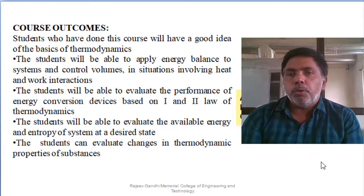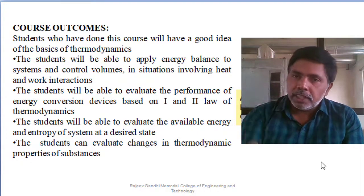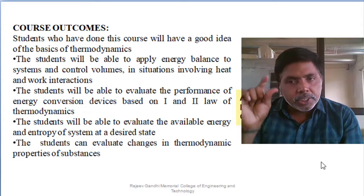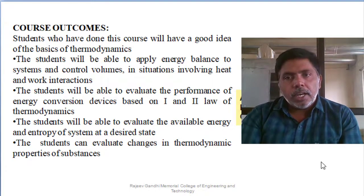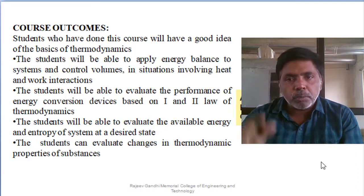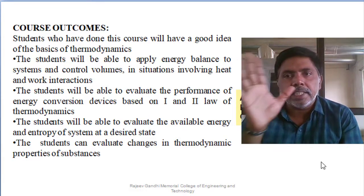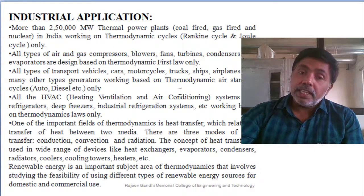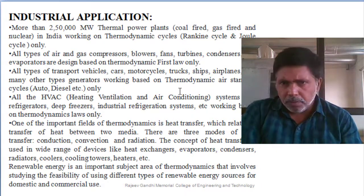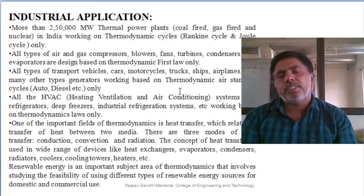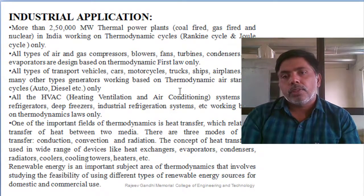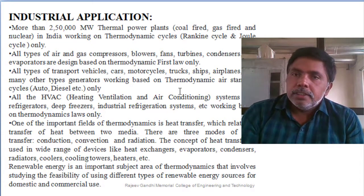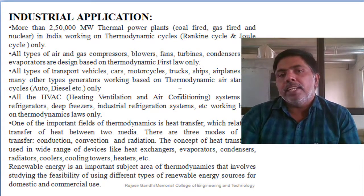A minimum of three and maximum of four course outcomes is more than sufficient for a three or four credit course. Each course outcome requires three components: the performance component, the condition component, and the criterion component. You also want to include industrial applicability to create interest and zeal in the subject — so students understand what they can gain.